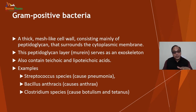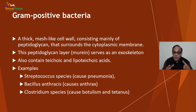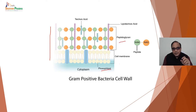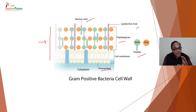The peptidoglycan layer, also called murein, serves as an exoskeleton and consists of teichoic and lipoteichoic acid. Examples of gram-positive bacteria include Streptococcus species which cause pneumonia, Bacillus anthracis which causes anthrax, and Clostridium species causing botulism and tetanus. Their cell wall is made up of phospholipids and peptidoglycan, containing teichoic acid and lipoteichoic acid — it is a thick cell wall characteristic of gram-positive bacteria.